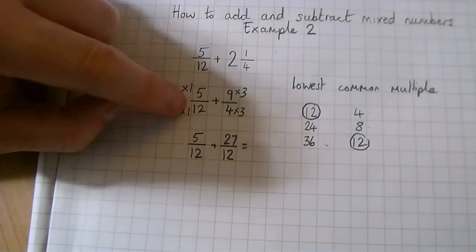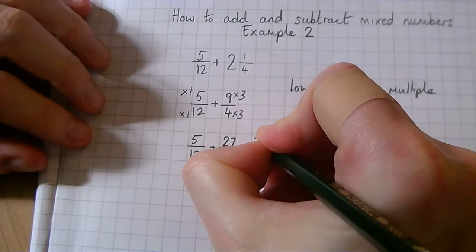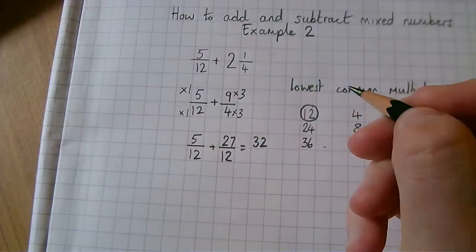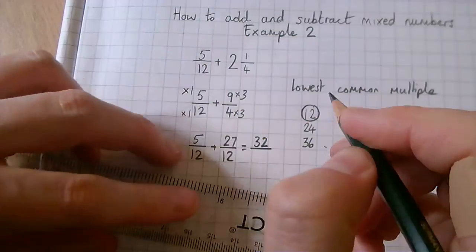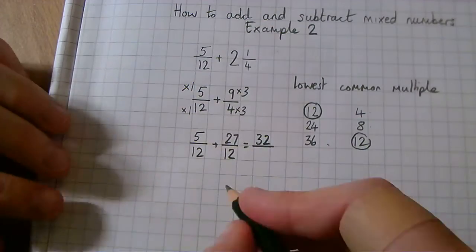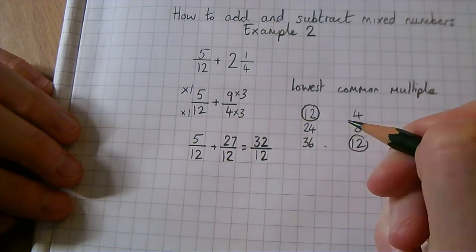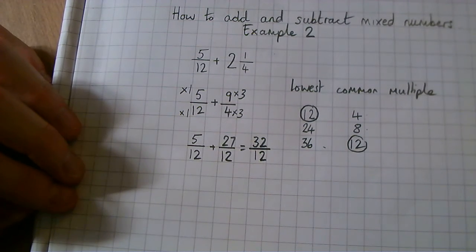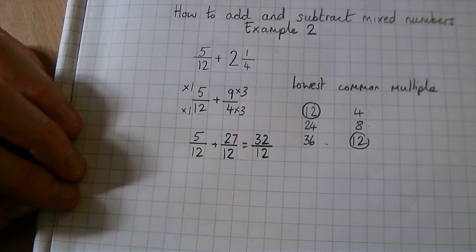9 times 3 is 27, and 4 times 3 is 12. Now we are ready to do our adding. We do 27 add 5, which is 32. Remember that when you add or subtract fractions the denominator stays the same. So our answer is 32 twelfths, and that is correct — we have an improper fraction.